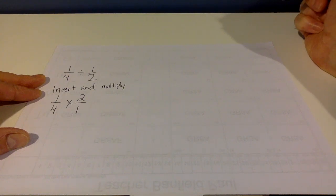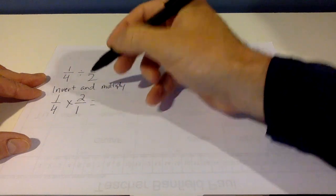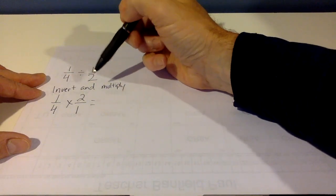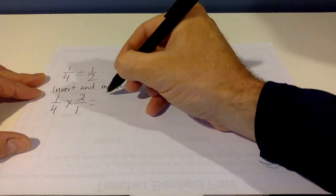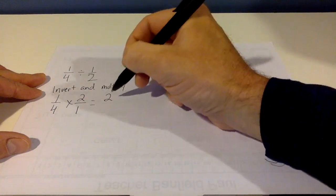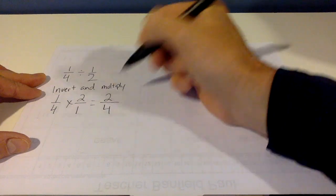And if you saw in the video on how to multiply fractions, you'll remember that we go straight across the numerator, straight across the denominator. 1 times 2 is 2. 4 times 1 is 4.